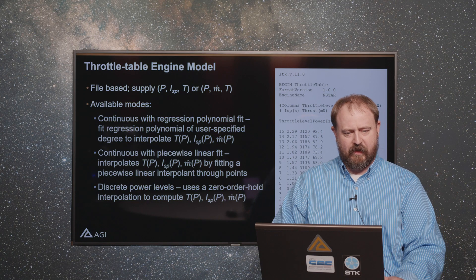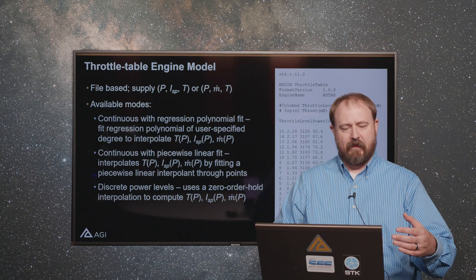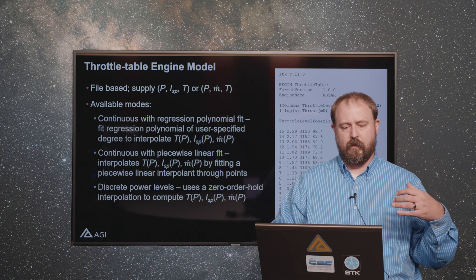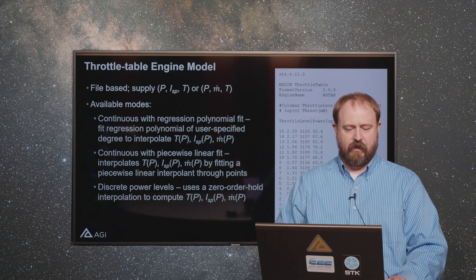Another exciting addition is the throttle table engine model. This lets you provide a file — like the one you can see on the screen — where you can specify things like, for a given throttle level, what your power is, what your ISP is, and what your thrust level would be. You have different operating modes for your engine, and you're able to pick how you want to interpolate that data or use it at discrete power levels. Options include a continuous model with a regression polynomial fit of an order you specify, a piecewise linear fit, or operating at discrete levels.